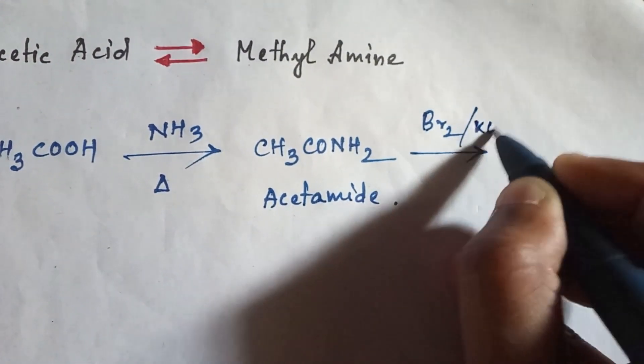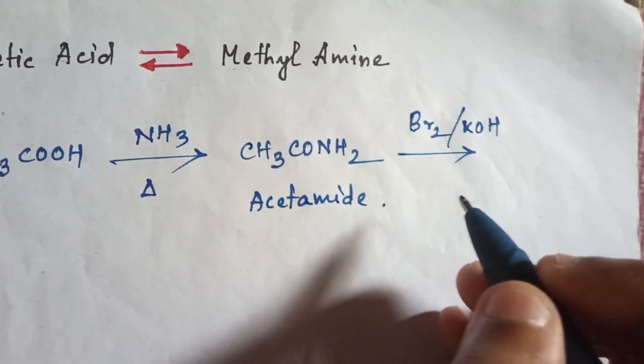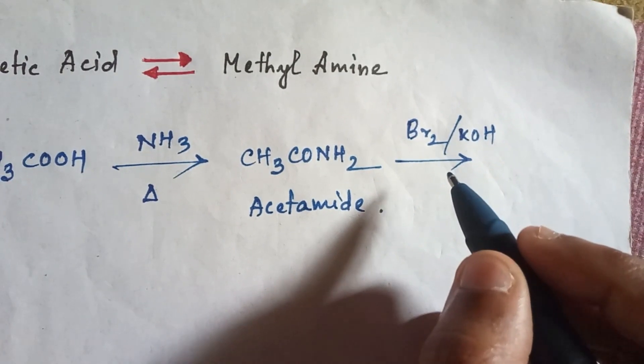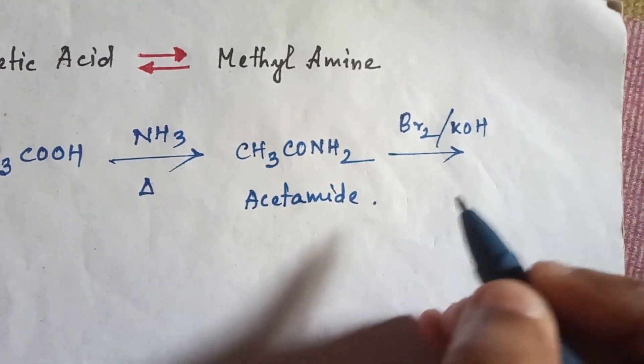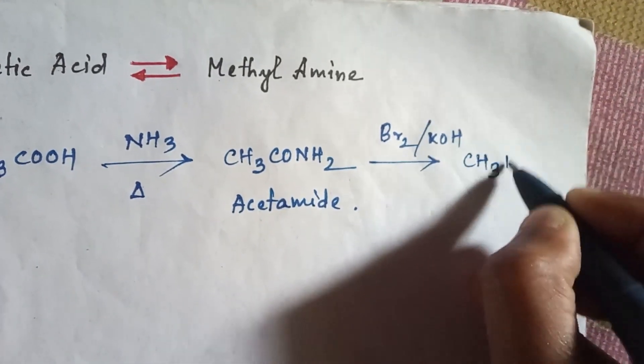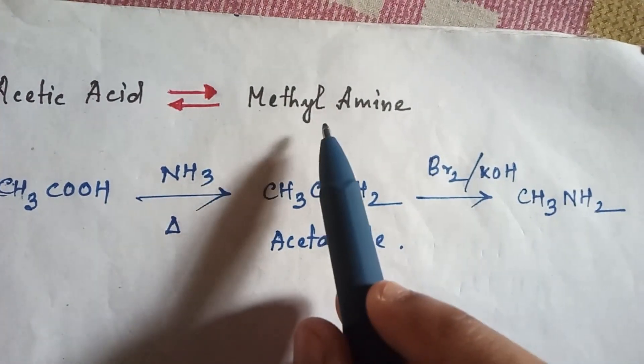So if you use this reagent, then from this compound the CO group will be eliminated and you will get CH3NH2, that is methyl amine.